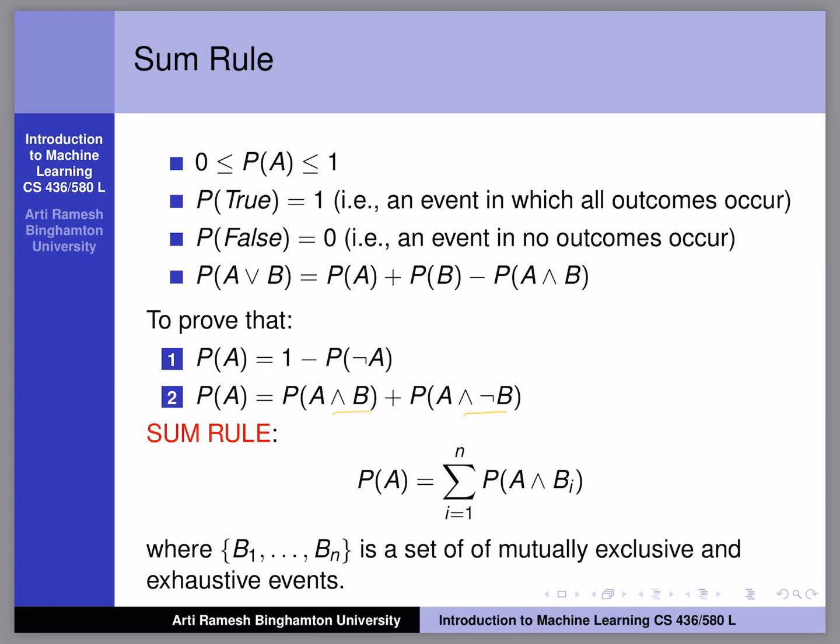So if it's not covering all possible events, it wouldn't add up to P of A. So B1 to Bn are a set of mutually exclusive and exhaustive events. Then we can say that P of A is equal to P of A and B of i, where i goes from 1 to n.